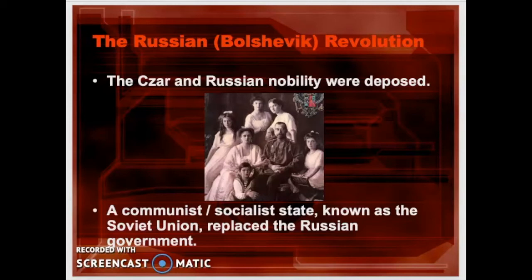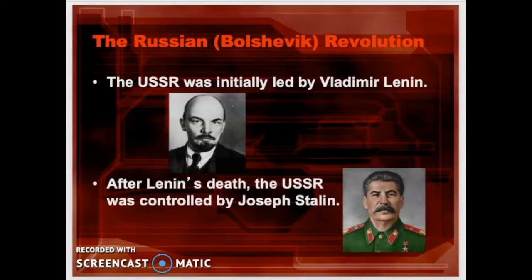The communists killed the Tsar's family because there was a large movement of 'white Russians' — the Tsarists, as opposed to the red communists — wanting to bring the Tsar back. To remove their rallying point, the family was murdered. The USSR was initially led by Vladimir Lenin, the focal point of the early revolution. His preserved body can still be seen today in a glass case in Moscow. After Lenin's death, a power struggle brought Joseph Stalin to power.